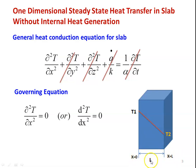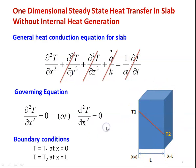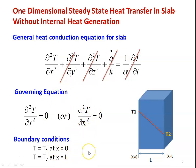The slab has length L. On the left-hand side, x = 0 and T = T1; on the right-hand side, x = L and T = T2. From the physical situation, the boundary conditions are: T = T1 at x = 0, and T = T2 at x = L. This is the governing equation and these are the boundary conditions. We solve this differential equation within the boundary conditions to find the temperature distribution and heat transfer.